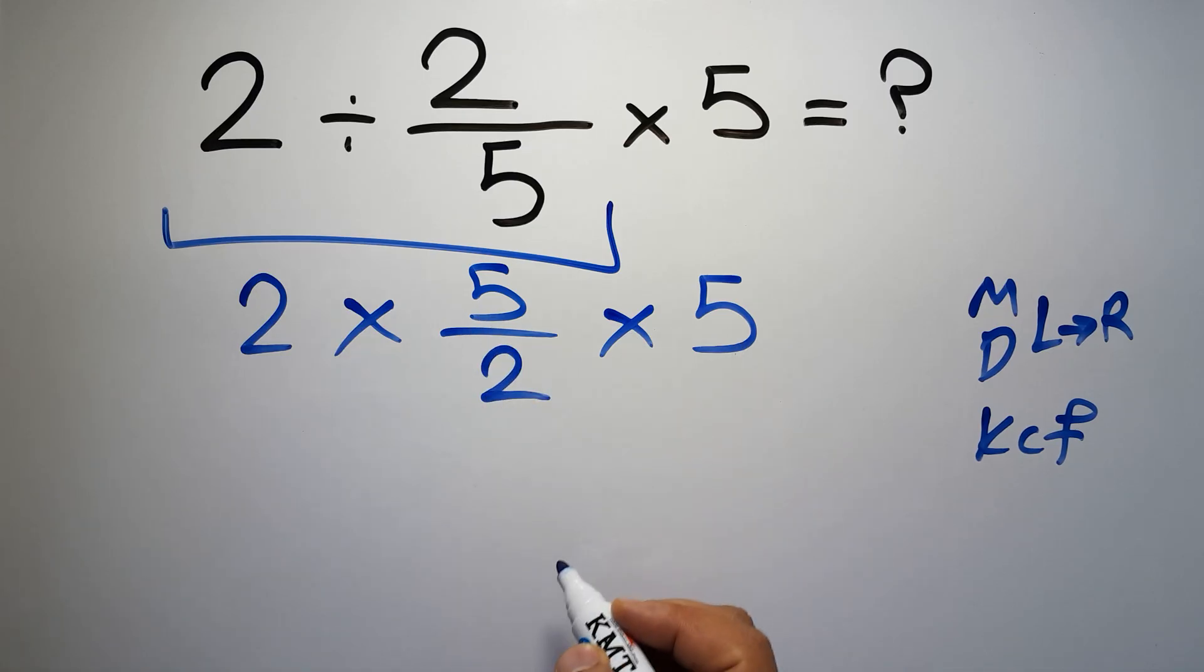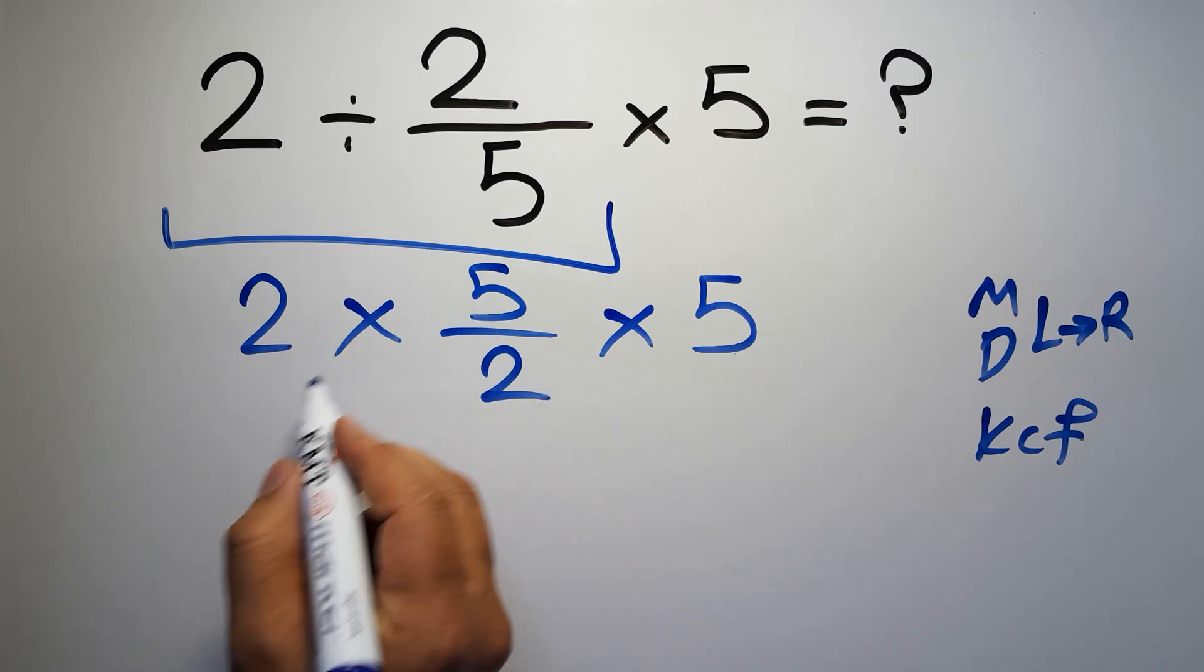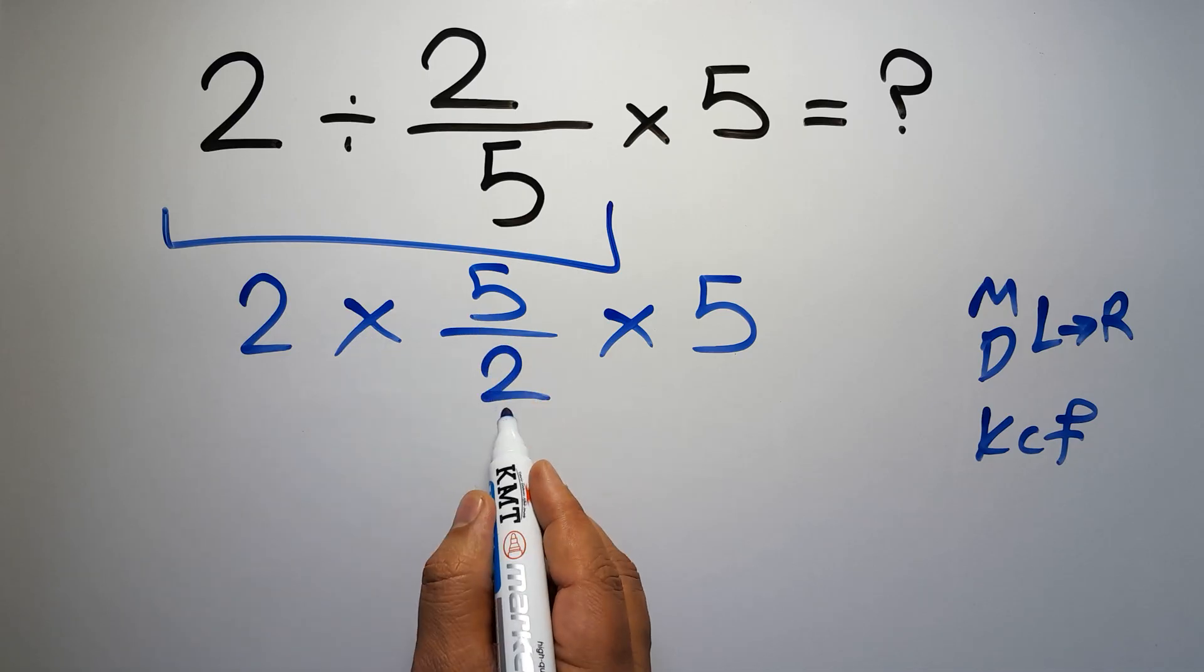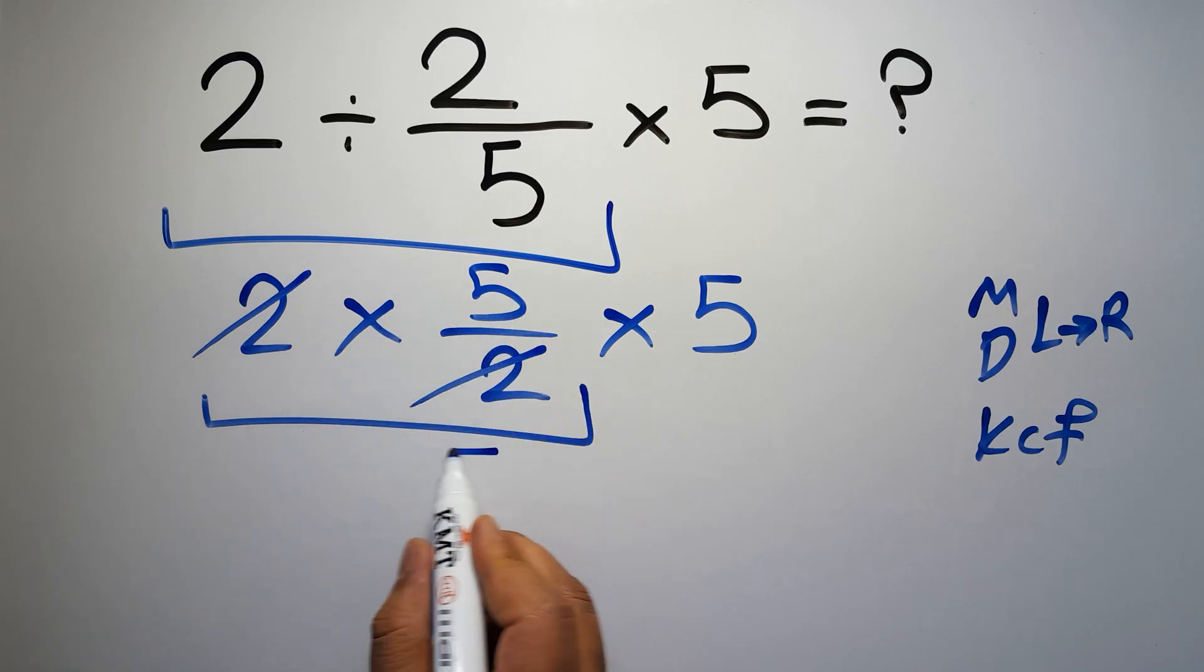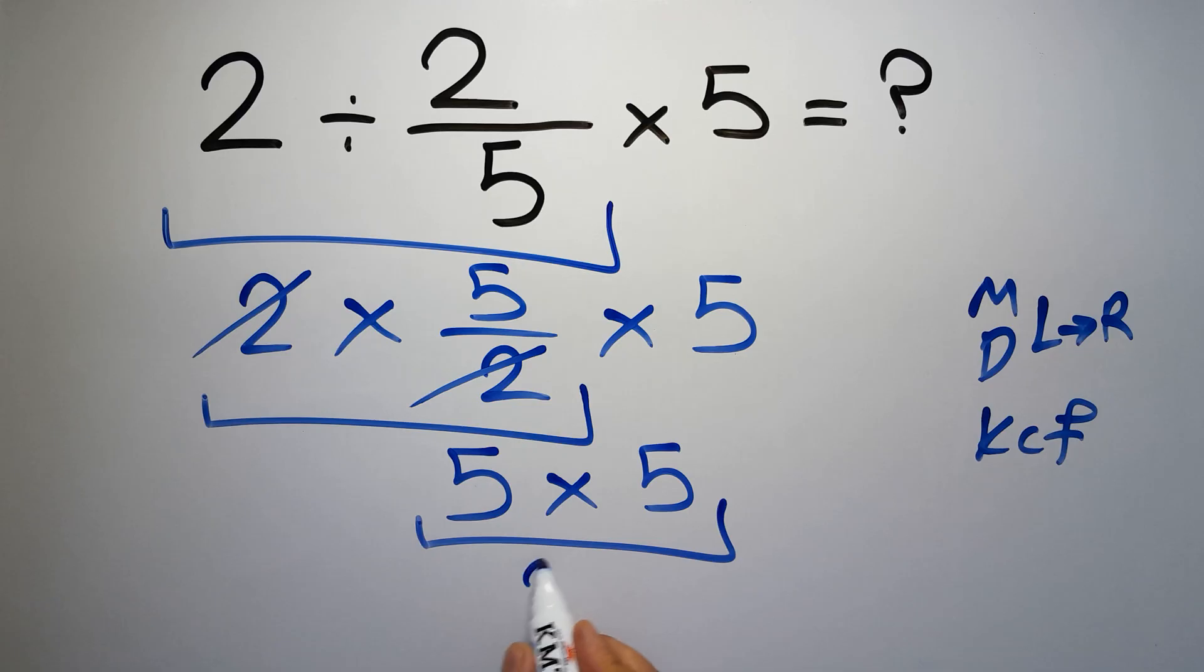First we do this multiplication: 2 times 5 over 2. We can easily cancel this 2 and this 2, so here we have just 5, and then 5 times 5, which gives us 25.